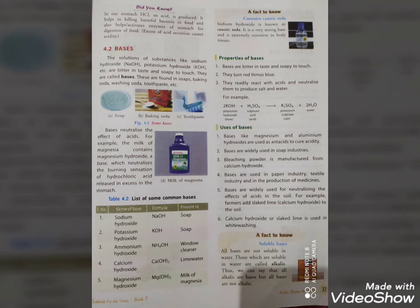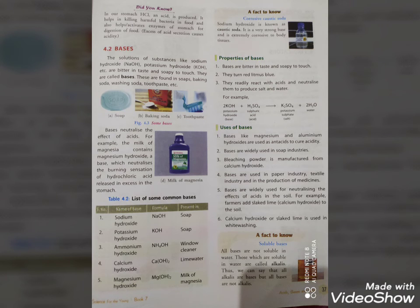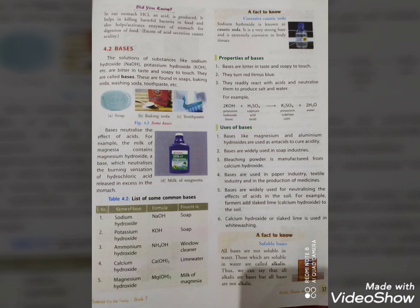What are the uses of bases? Bases like magnesium hydroxide and aluminium hydroxide are used as antacids to cure acidity. Bases are also used in soap industries. Bleaching powder is manufactured from calcium hydroxide. And bases are used in the paper industry, textile industry, and in the production of medicines. Bases are also used for neutralizing the effects of acid in the soil.